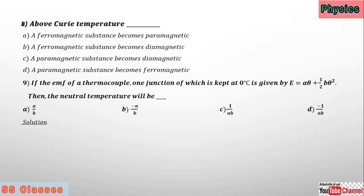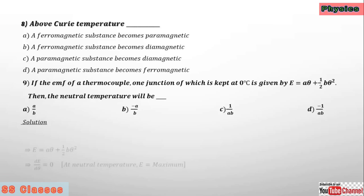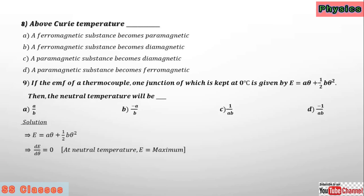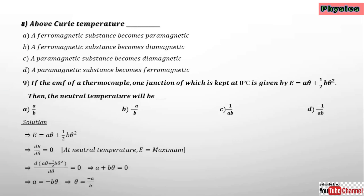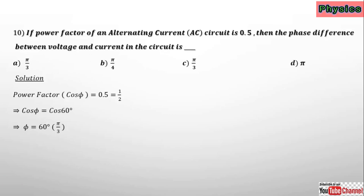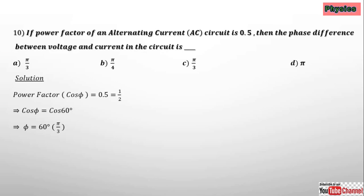If the EMF of a thermocouple, with one junction kept at zero degrees Celsius, is given by E equals a θ plus b θ squared, then the neutral temperature is found where EMF is maximum. Taking the derivative dE/dθ equals zero gives a plus 2b θ equals zero, so θ equals minus a by b.